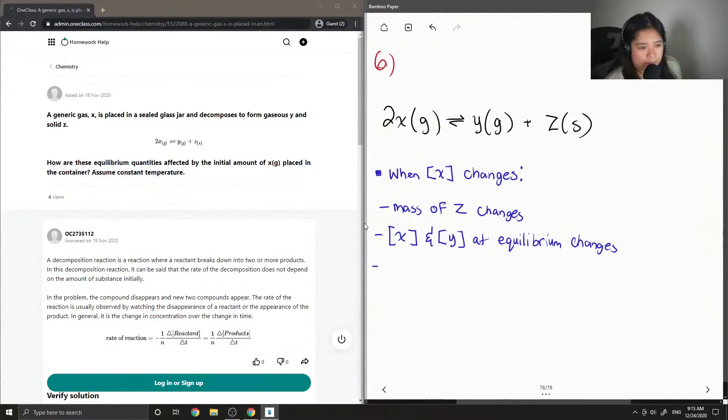Okay, so since Y is a gas as well, if there was more or less of our initial X, then that means the pressure inside this sealed glass jar will change as well. So I'm going to just say total pressure changes.